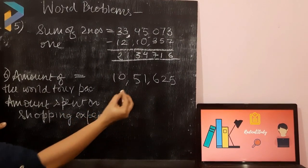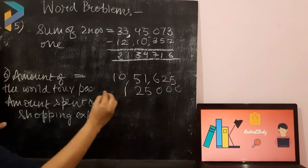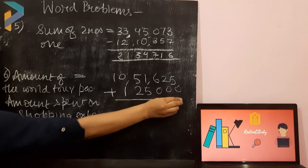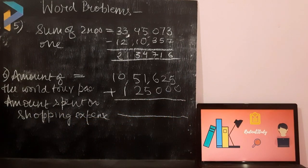It was 1,25,000. So, what was the total amount of his world tour? What we have to do in this question? We have to add.